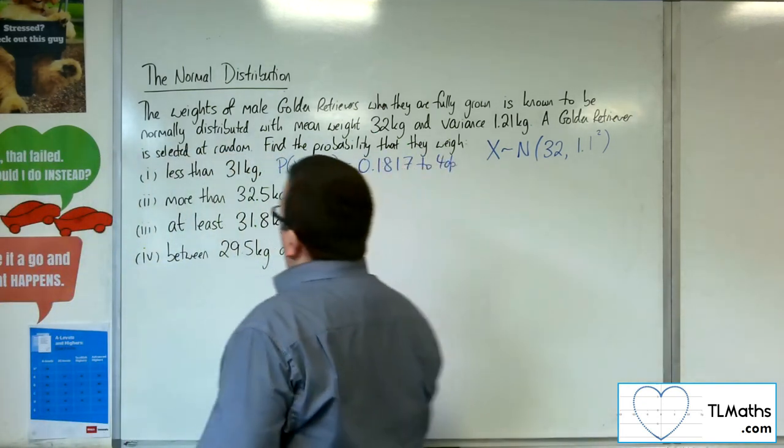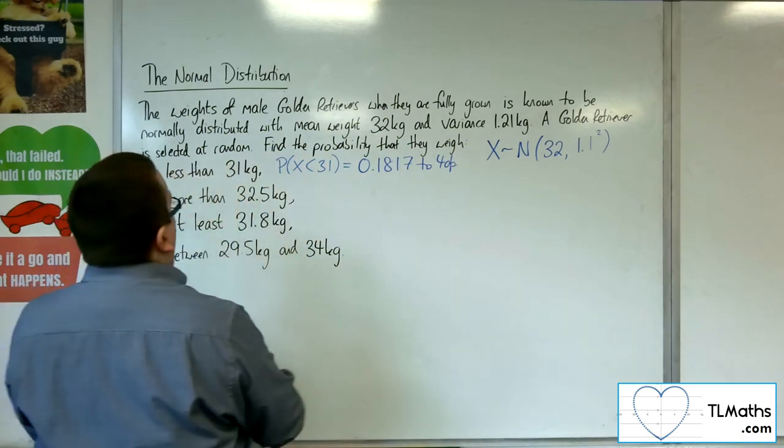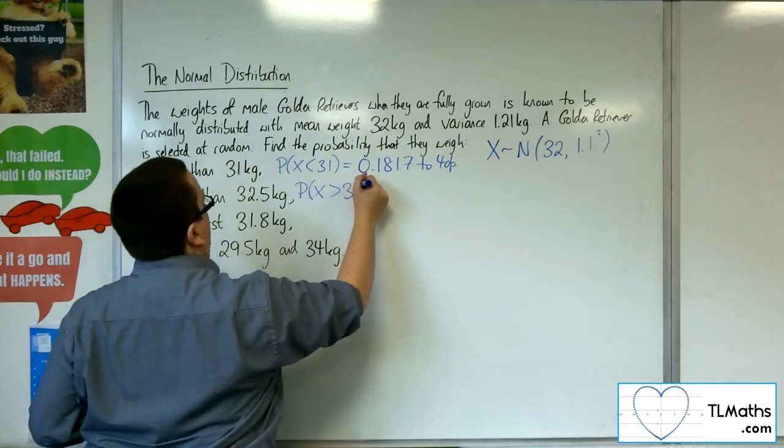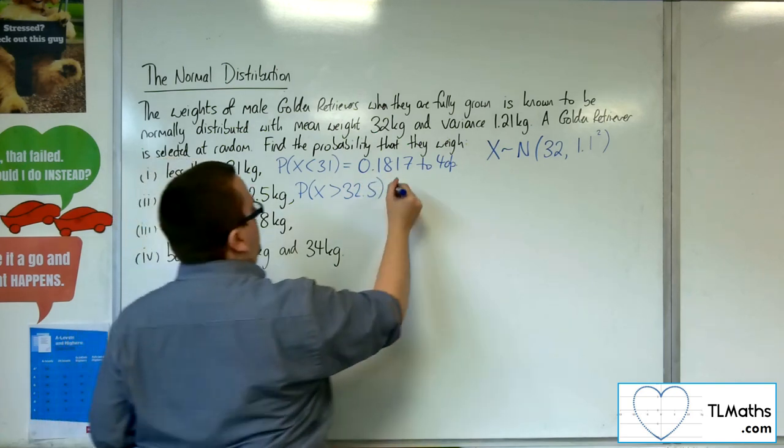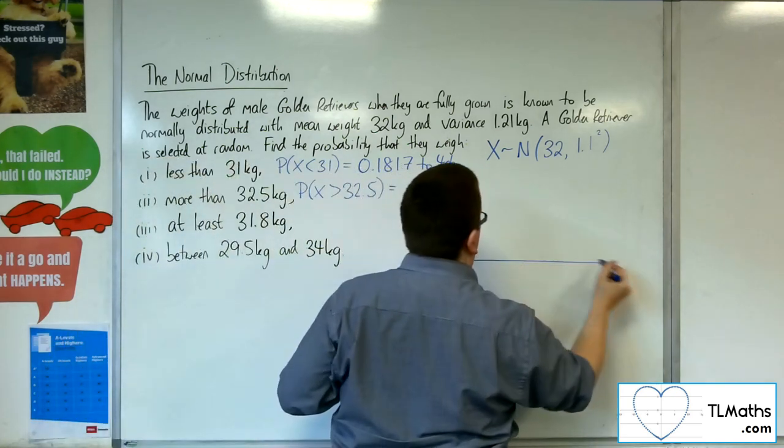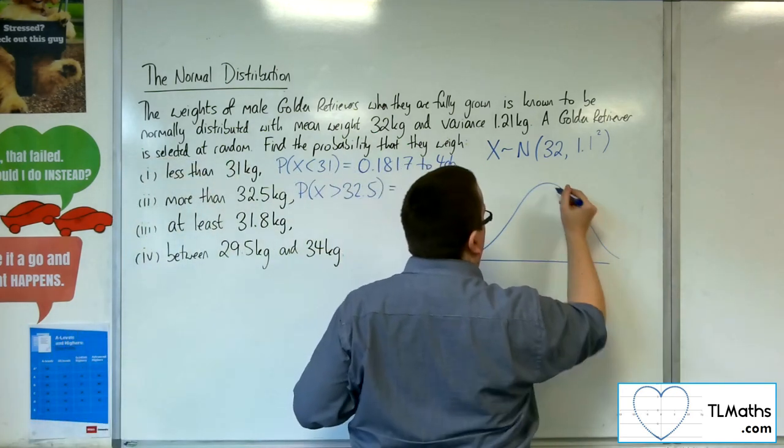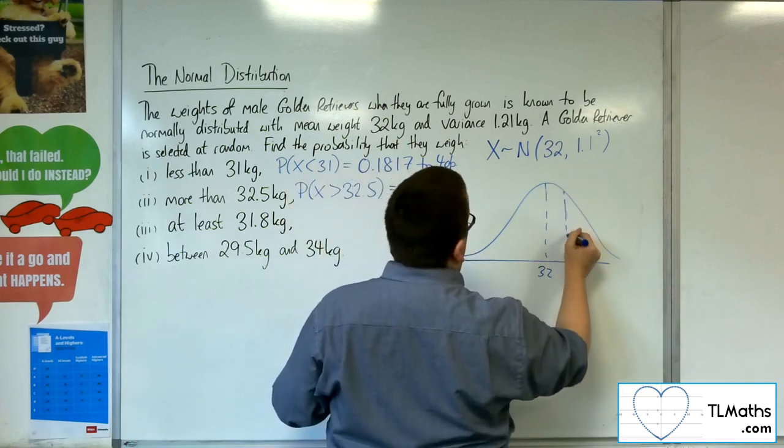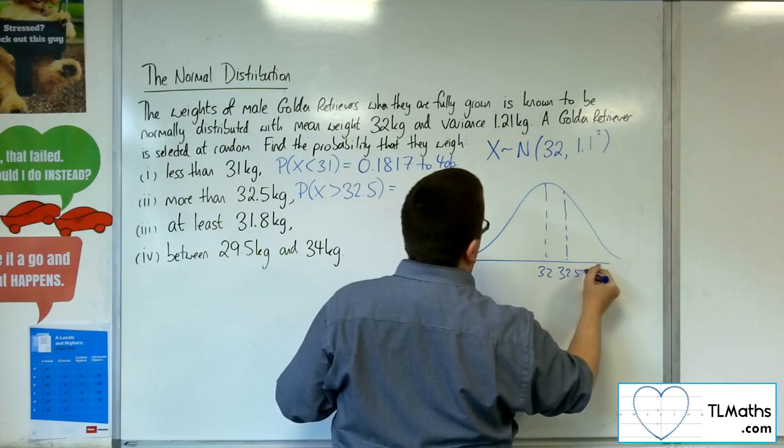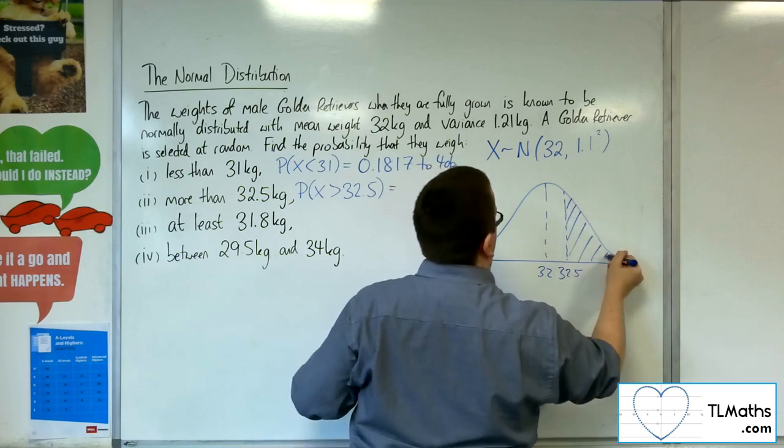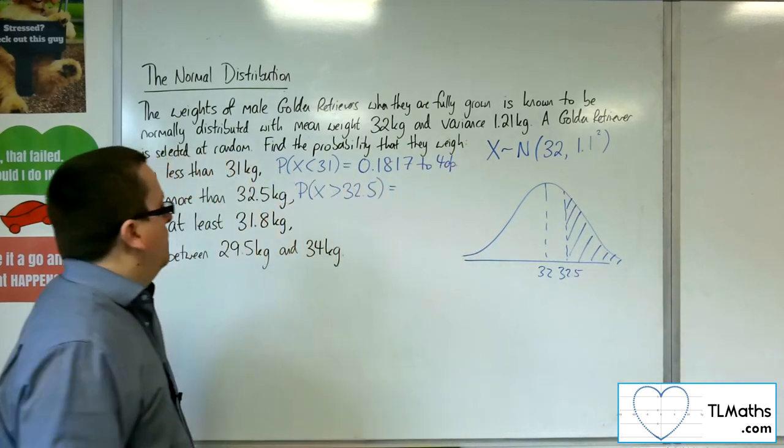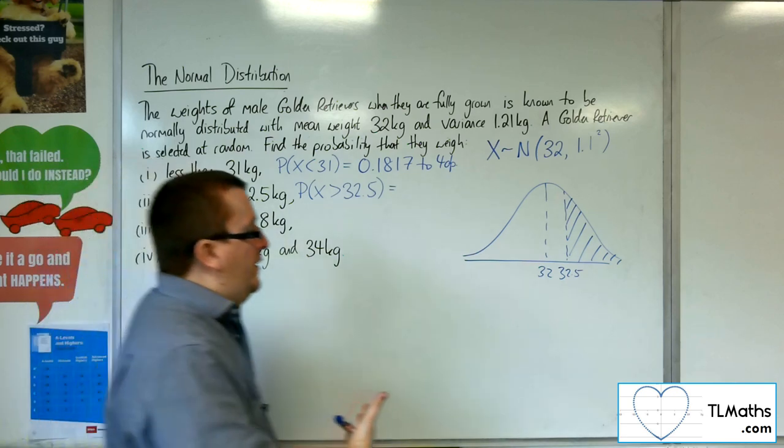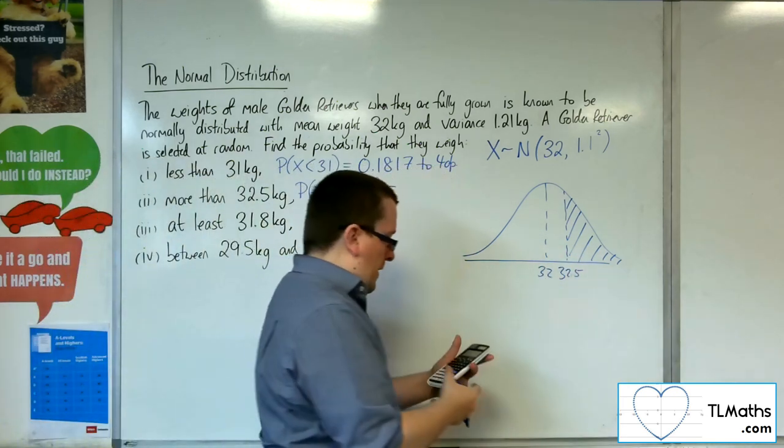So 0.1817 is the probability for the first one. Now I want to find the probability of getting more than 32.5. So the probability that X is greater than 32.5 kilos. These are quite heavy dogs. Right. So my mean was 32, 32.5 can be there, and I want to find that area.